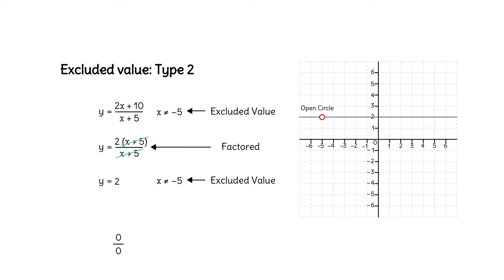Remember, if an x value results in 0 over 0, it's an excluded value, which results in a hole in the graph. This hole is called a removable discontinuity. Factoring and canceling often means we have a removable discontinuity. This is our second type of excluded value.